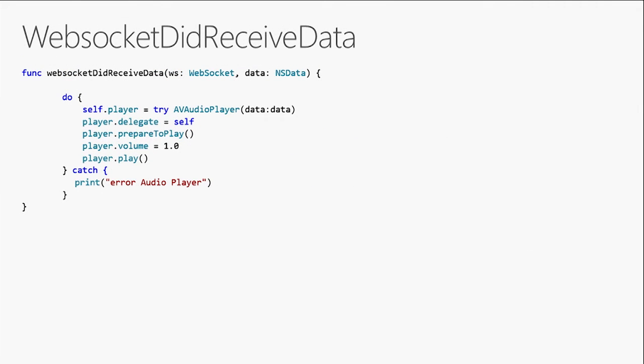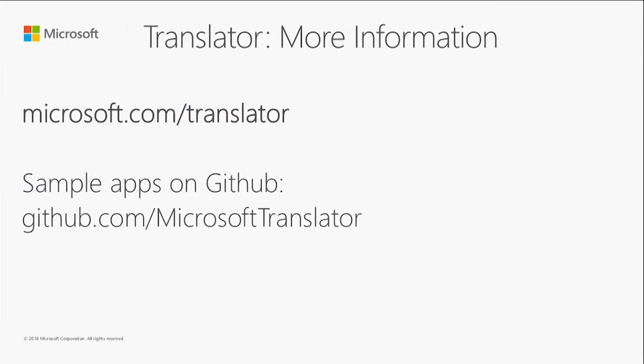If we were processing the audio data — which we're not doing in this app right now — it might look something like this. When you get a chunk of audio data back from the service via the WebSocketDidReceiveData method, you check the first bit of the chunk to see if it is the last bit, called the fin bit. The fin bit lets you know you've got all the data you need back, and then you put all the data together and play the audio. All of this code will be available on GitHub along with sample apps for C# and Python.